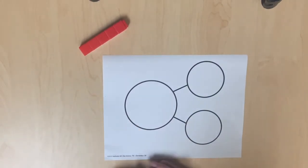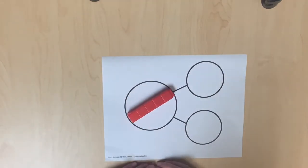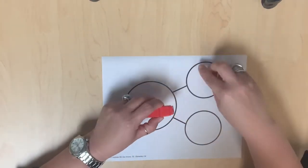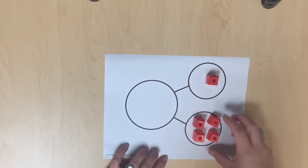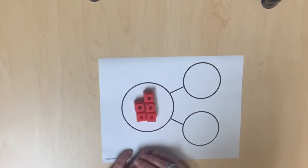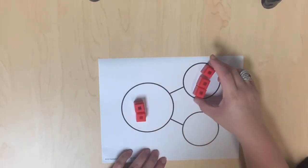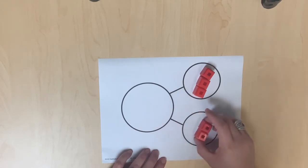How can five be decomposed using a number bond? Five is decomposed into two parts, one and four. Five could also be decomposed into two parts, three and two, etc.